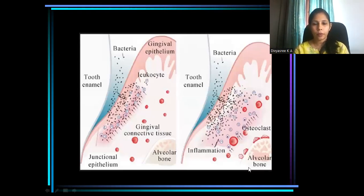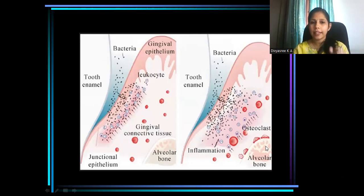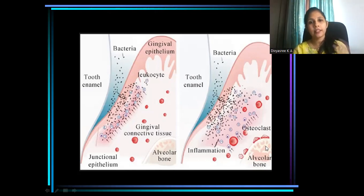Alveolar bone loss is due to either direct activity of the microbes through toxic mediators, or it is due to the host response acting against the microbial challenge, which ultimately results in activation of osteoclasts causing resorption of bone. When gingival inflammation is not confined to the gingival tissues and not kept under control, it extends into the underlying alveolar bone, resulting in bone destruction.